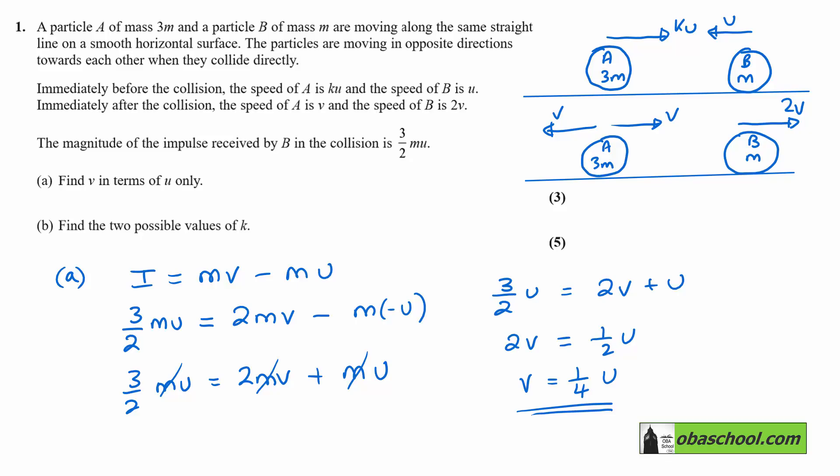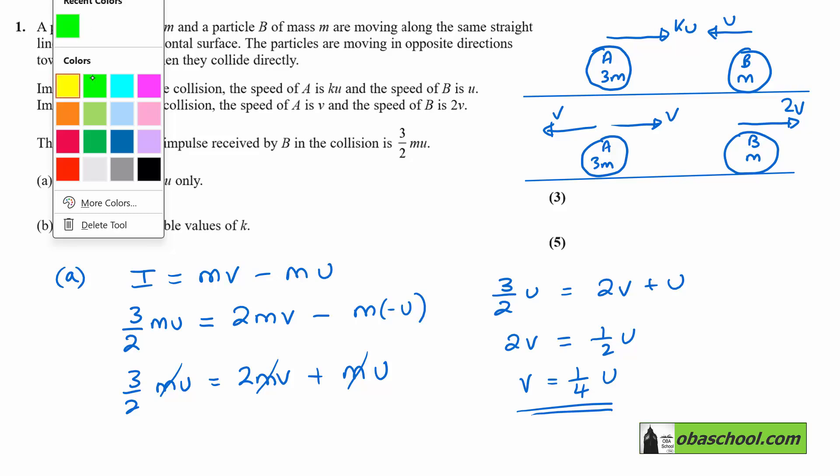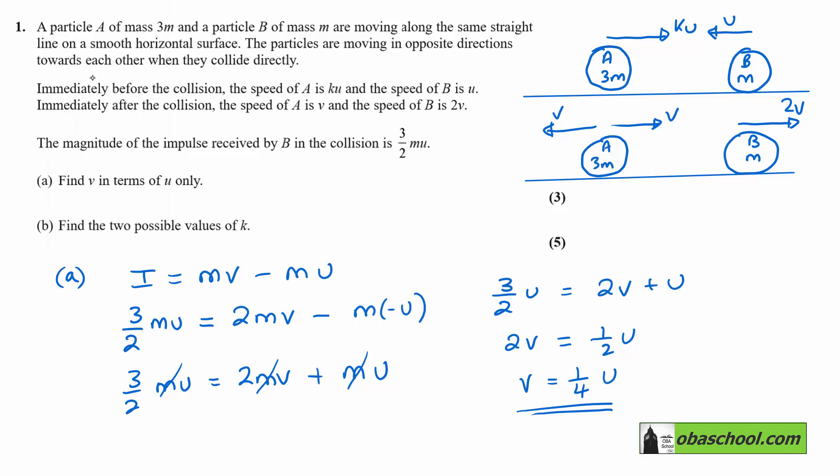Find the two possible values of K. That relates to the fact that this could be in either direction. So that's important now, and we're going to use the conservation of linear momentum.